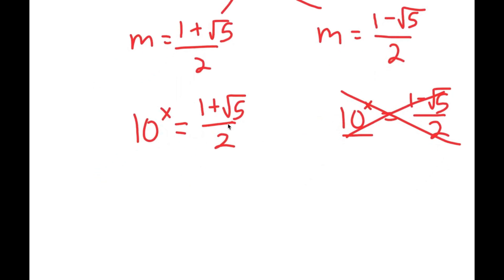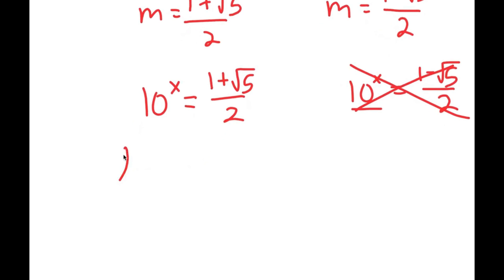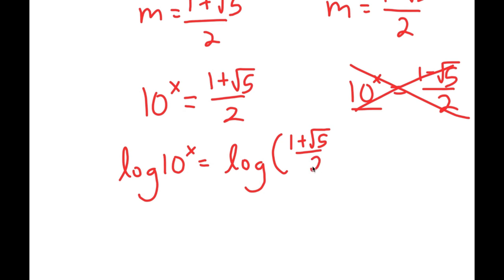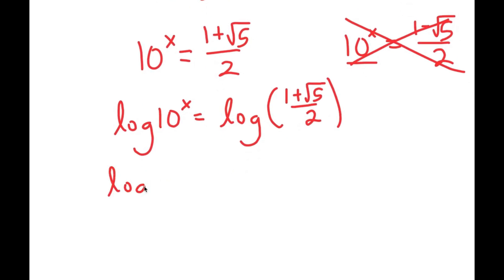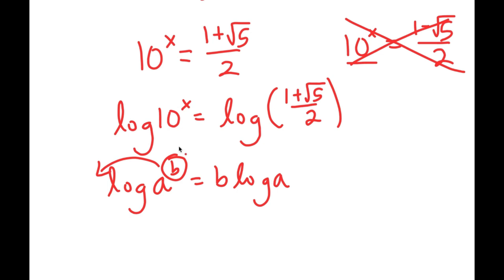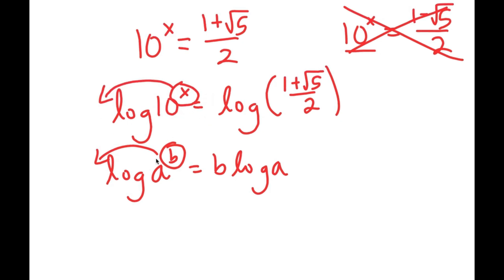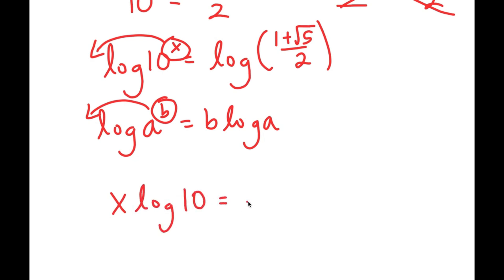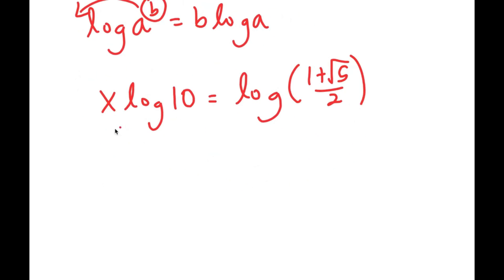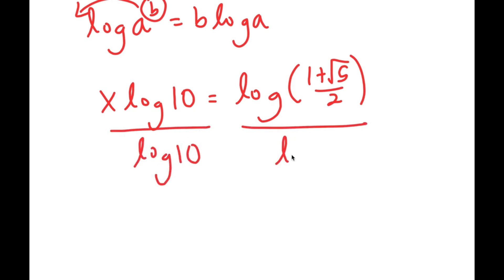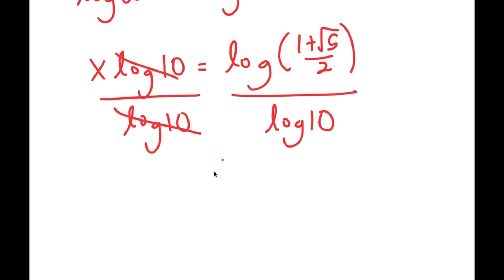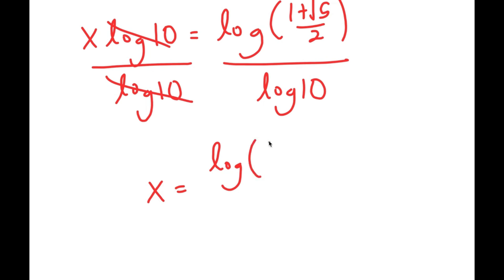So we are only left with 10 to the power of x is equal to 1 plus the square root of 5 over 2. To solve this, I'm going to take the log on both sides. So I get log of 10 to the power of x is equal to log of 1 plus the square root of 5 over 2. If I have something in the form log a to the power of b, I can move the exponent b to the front. So I get x times log 10 is equal to log of 1 plus the square root of 5 over 2. Then I divide both sides by log 10, and these two cancel out, giving x is equal to log of 1 plus the square root of 5 over 2, over log 10.